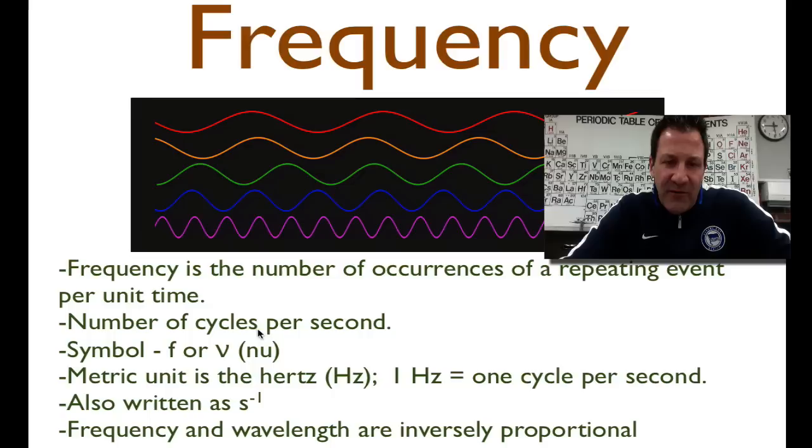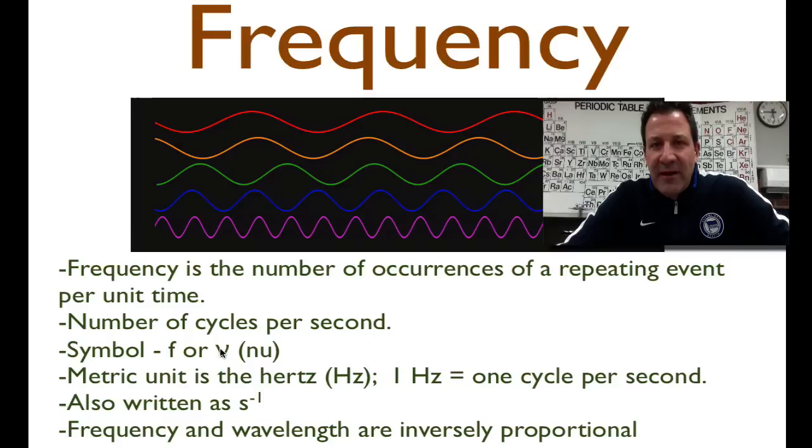Sometimes we use this Greek letter nu, but it looks like a V, so I usually use an F. The metric unit is the hertz, named after Heinrich Hertz, and one hertz is just defined as one cycle per second, one wavelength passing a given point in a second. And it can also be written, the way you often write it is Hz, but you can also write s to the minus one, which means one over s, which is like cycle per second.